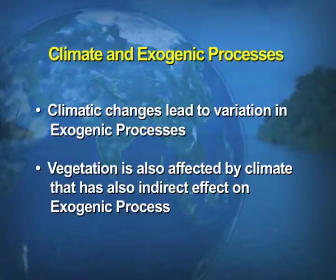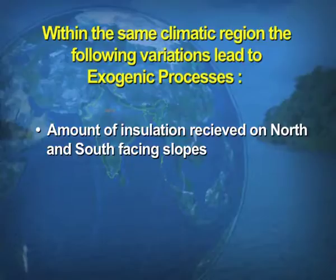Different areas experience different types of climate, and climate plays a major role when exogenic processes take place. Climate changes lead to variation in exogenic processes. Vegetation is also affected by climate, so indirectly vegetation is also a part of exogenic forces. Even within the same climatic areas, certain changes can be observed.